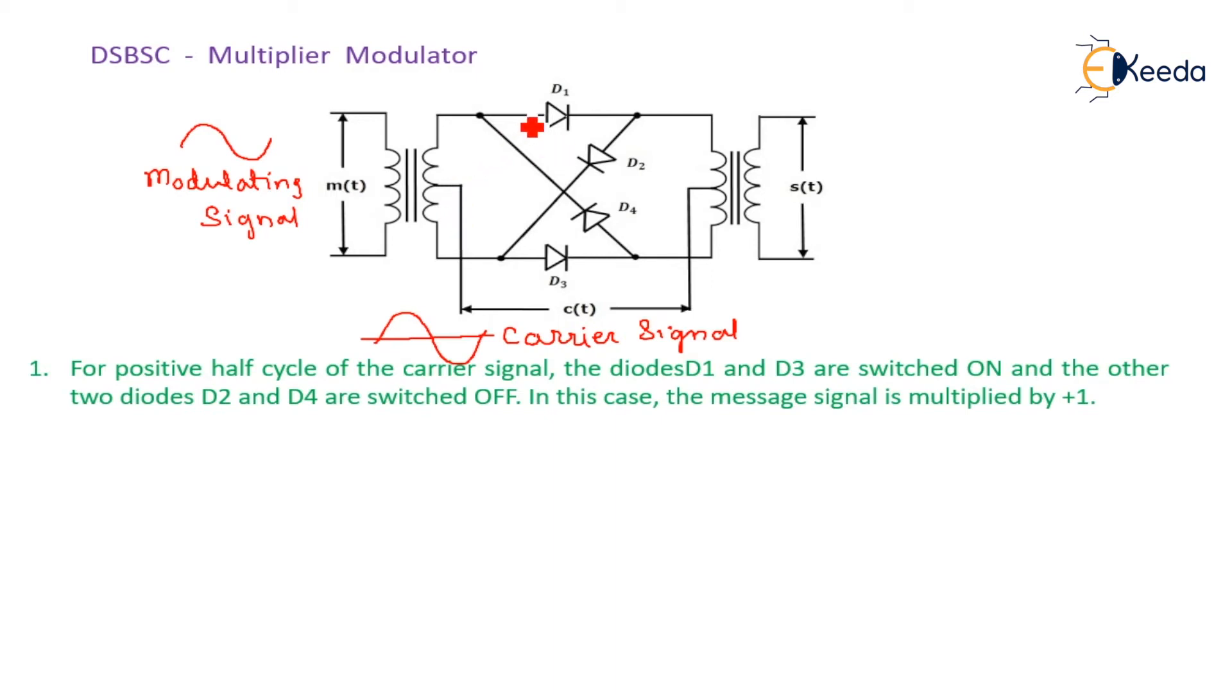Whereas diode D4 and D2 are in reverse bias, so they remain off. In this case, the message signal is multiplied by plus one.